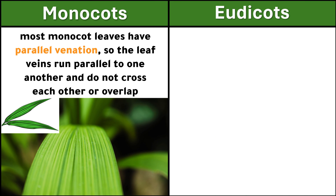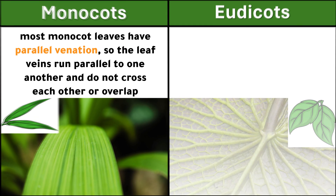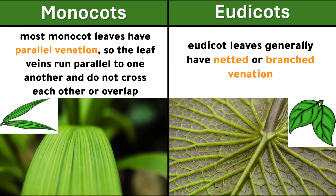Most monocot leaves have parallel venation, so the leaf veins run parallel to one another and do not cross each other or overlap. Eudicot leaves generally have netted or branched venation.